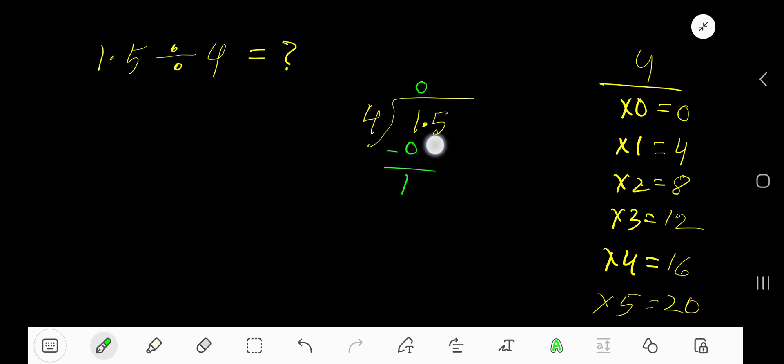Subtract 1, bring down the next digit, which is 5. Before this digit there is a decimal, so the decimal must come to the quotient directly. 4 goes into 15 how many times? Not 4 times, so 3 times. 3 times 4 is 12. Subtract.